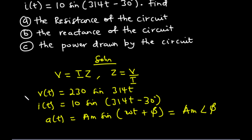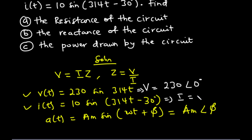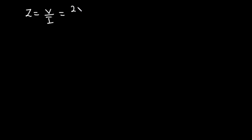That is what we are going to do for V of T and I of T. For V of T, it is basically V equals 230 angle 0 degrees, and for I of T, we have I equals 10 angle negative 30 degrees. So the impedance of the circuit, which equals V over I, is equal to 230 angle 0 degrees over 10 angle negative 30.